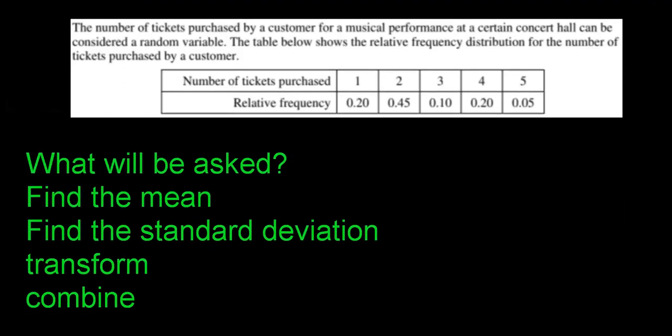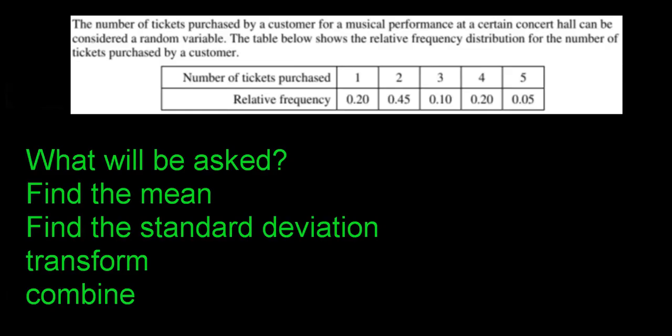Let's look at a discrete random variable example. The number of tickets purchased by a customer for a musical performance can be considered a random variable — you can purchase one, two, three, four, or five tickets, and there are no other outcomes. The relative frequency is just a fancy word for how often each outcome happens, or the probability. One ticket: 20% of the time, two tickets: 45% of the time, five tickets: 5% of the time.